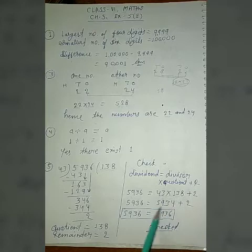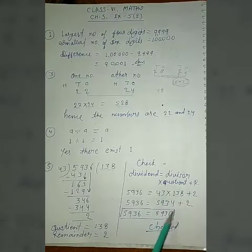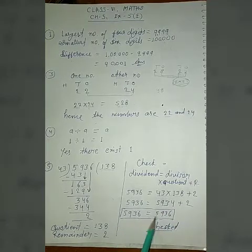Dividend equal to divisor into quotient plus remainder. This is the dividend equal to this is the divisor 43 into 138 quotient plus remainder 2. When you multiply these two numbers you will get 5934 plus 2, add the 2, 5936 equal to 5936. Checked.